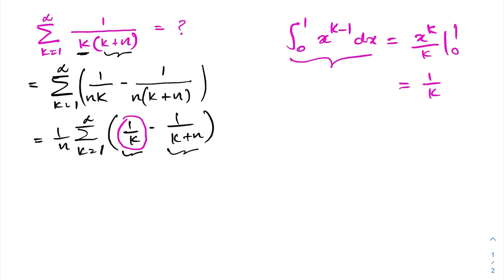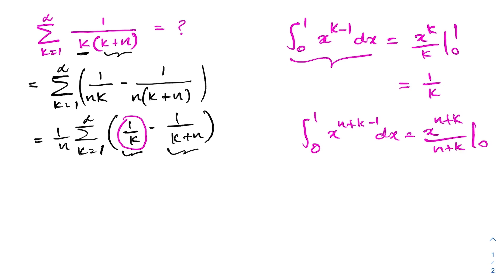Similarly, if we take the integral from 0 to 1 of x to the n plus k minus 1 dx, we get x to the n plus k over n plus k evaluated from 0 to 1. Applying the limits gives us 1 over n plus k, so for the term 1 over k plus n we can plug in this integral.